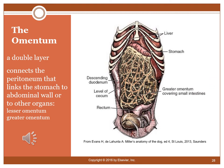The omentum is a large covering that drapes from the stomach down to the intestines. It is important for protecting the inner abdominal contents and assisting healing after erosion or surgery. It is a double layer that connects the peritoneum and links the stomach to the abdominal wall or other organs. There is a lesser omentum and a greater omentum, which extends all the way down to the level of the rectum and appears as a large lacy fatty structure during abdominal surgery.